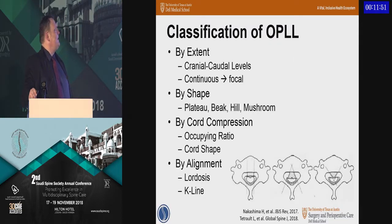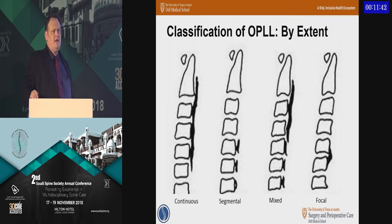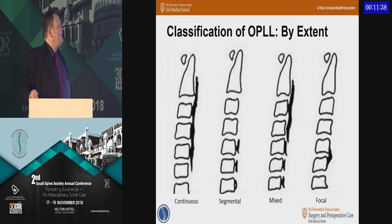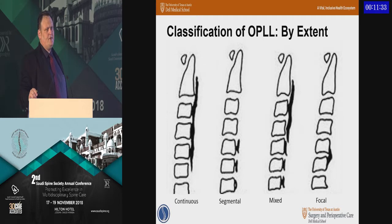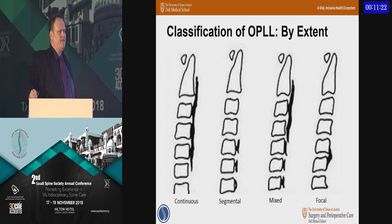When we classify OPLL during workup, we can do it by extent, shape, and so on — all individually and in combination are helpful. We typically think of the Japanese Health Ministry classification, which points out classic features: long continuous bars of ossified posterior longitudinal ligament, and even when it's segmental, quite a bit of retrovertebral disease as opposed to disc-level disease — very different from spondylotic myelopathy.